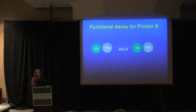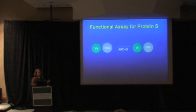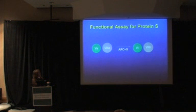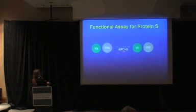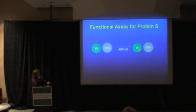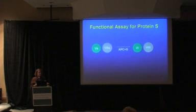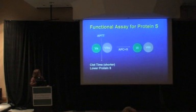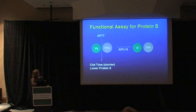So why does factor 8 and factor 5 Leiden affect functional protein S assays? Most assays for protein S take into account that protein S acts as a cofactor to protein C to degrade factor 5 and factor 8. If you don't have factor 5 and factor 8, your clotting times like your PTT are going to be longer. So a shorter clot time in the assay is associated with a lower protein S.